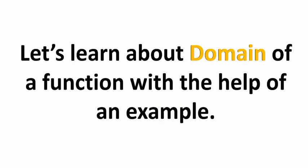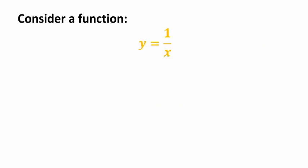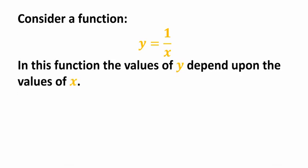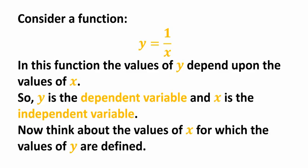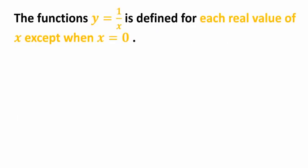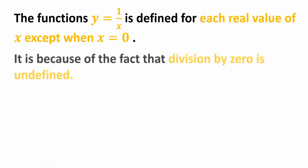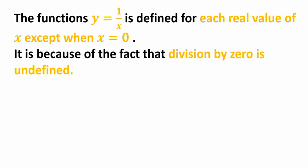Let's learn about domain of a function with the help of an example. Consider a function y is equal to 1 by x. In this function the values of y depend upon the values of x, so y is the dependent variable and x is the independent variable. Now think about the values of x for which the values of y are defined. The function y = 1/x is defined for each real value of x except when x is 0.